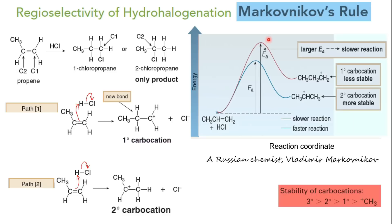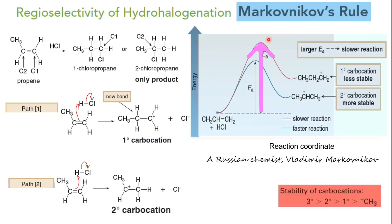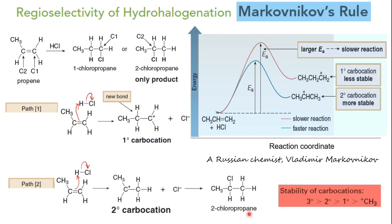The transition state for the more stable secondary carbocation must be lower in energy than for the less stable primary carbocation. Therefore, the activation energy for the formation of the more stable secondary carbocation is lower than for the primary carbocation, and the secondary carbocation is formed faster. Thus, a single product, 2-chloropropane, is formed exclusively by addition of the halide anion to the secondary carbocation.